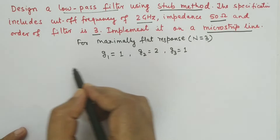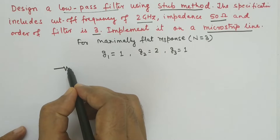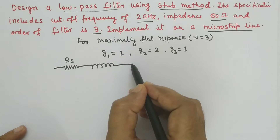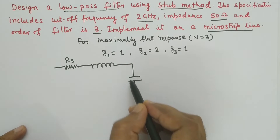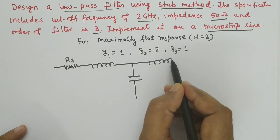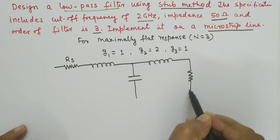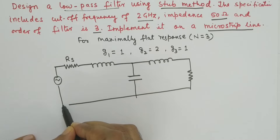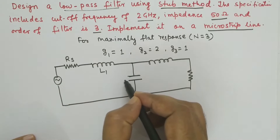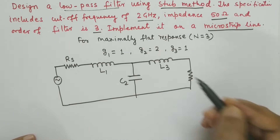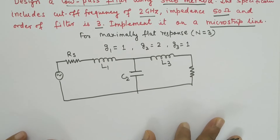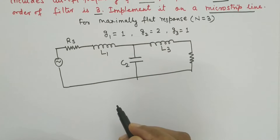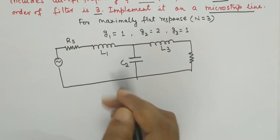The basic filter will be: source resistance RS, then a series inductor L1, then a shunt capacitor C2, another series inductor L3, and then the load resistance. So this is the three-element low pass filter. We are going to use Richards transformation and Kuroda identities to convert this lumped equivalent into transmission line form.